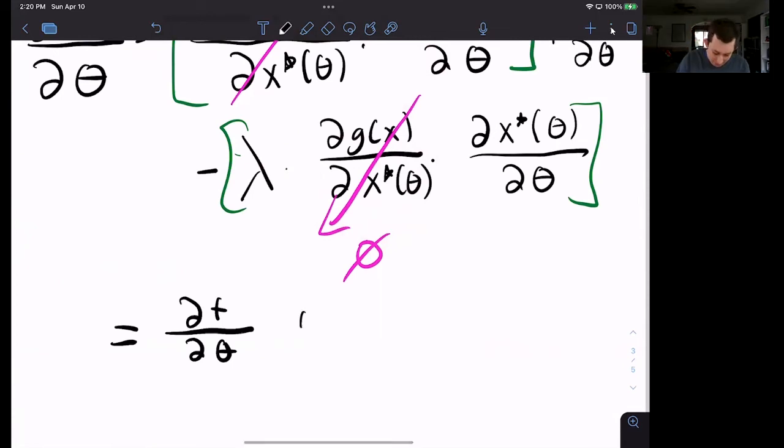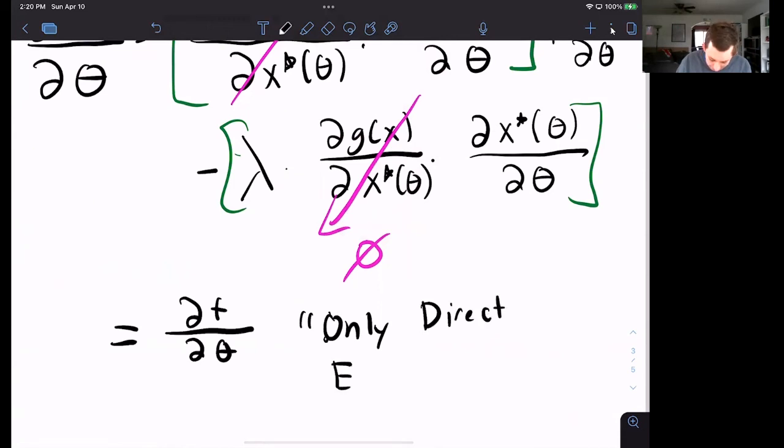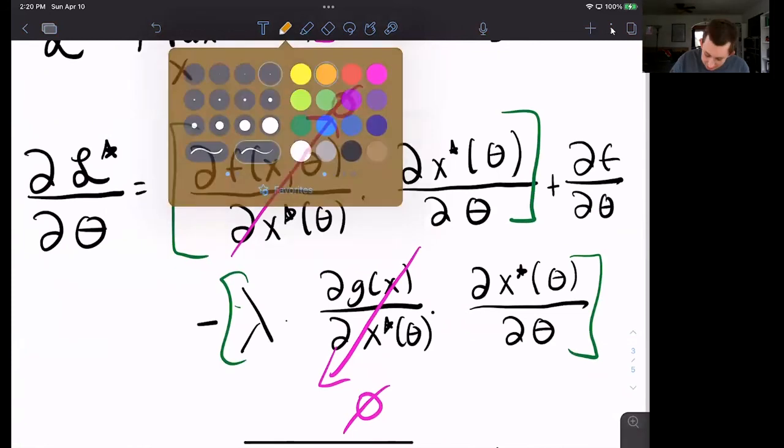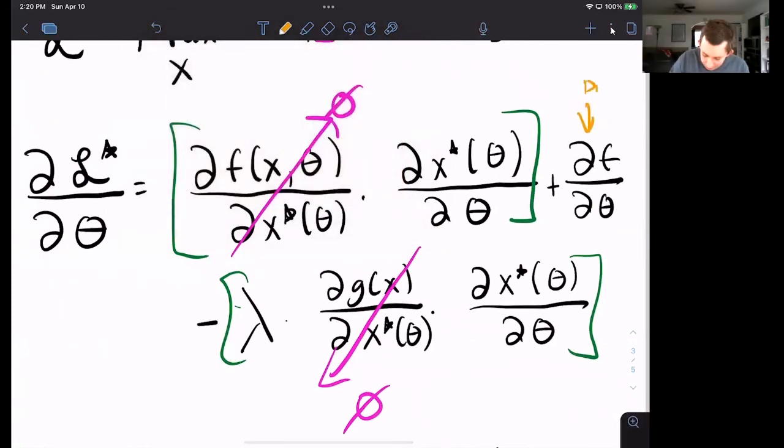Another way to think about this is to say that only direct effects matter. That means that I don't care how this change in theta affects my choice of x. I only care how this choice of theta affects my function f. So if we go back up to this function,